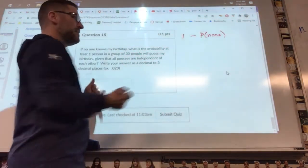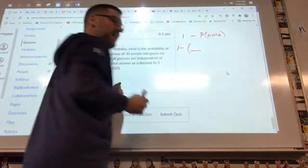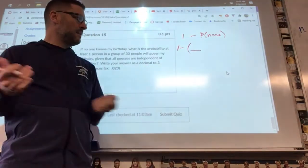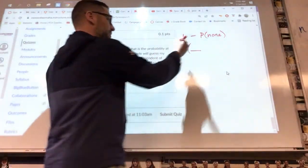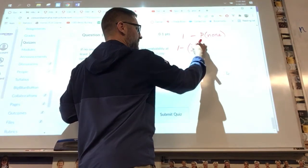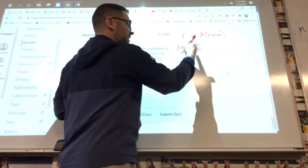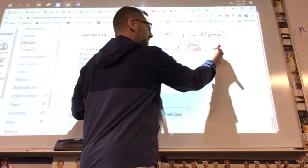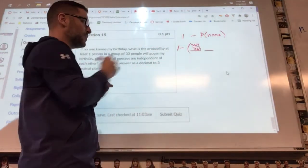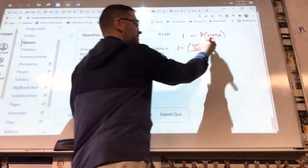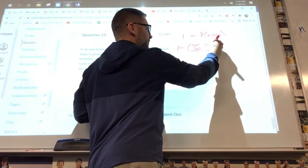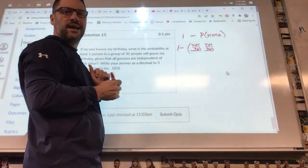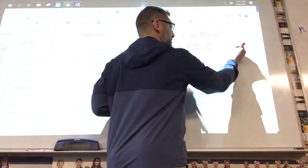Well, if they're independent events, the probability that the first person would not guess it right, that would be none, would be, well, he would have 364 out of 365. That would be the probability that you would guess wrong. That'd be the first person. Now the second person is independent of that, so he could guess the same way. So he has 364 out of 365 choices also. You kind of see how that works. And there's 30 of them.